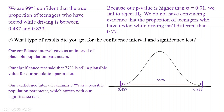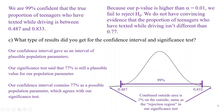Our confidence interval gives us that interval of plausible population parameters. Our significance test said that 77% is still a plausible value. When we failed to reject our null, that didn't mean we accepted it — it means this is still a plausible value for our population. Because our confidence interval contains that 77%, it agrees with our significance test. We made a 99% confidence interval from 0.487 to 0.833, and 0.77 falls within that interval. The combined area outside is 1% — 0.5% in each tail — representing our rejection region. If our null hypothesis had fallen into that rejection region, we would have rejected the null and said we have convincing evidence that it's not equal to 0.77.